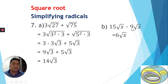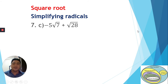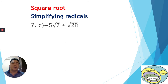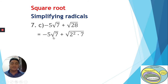Next, we have negative 5√7 plus √28. In the first term, we already have 7, which is a prime number. For √28, the factors of 28 are 4 and 7 — 4 is a perfect square and 7 is a prime number, which will stay inside the radical. So we rewrite as negative 5√7 plus √(4 × 7), or √(2² × 7).